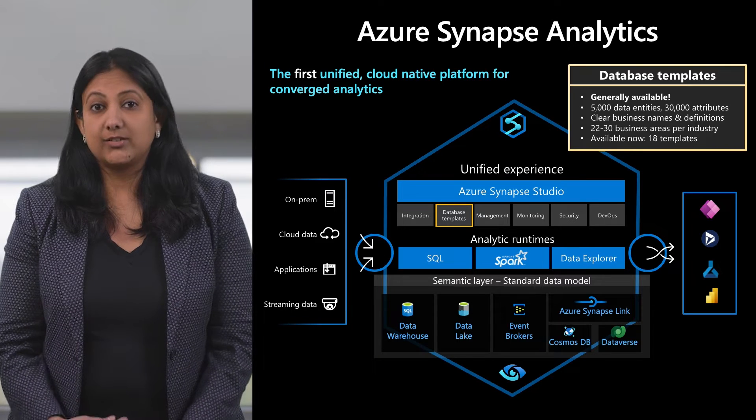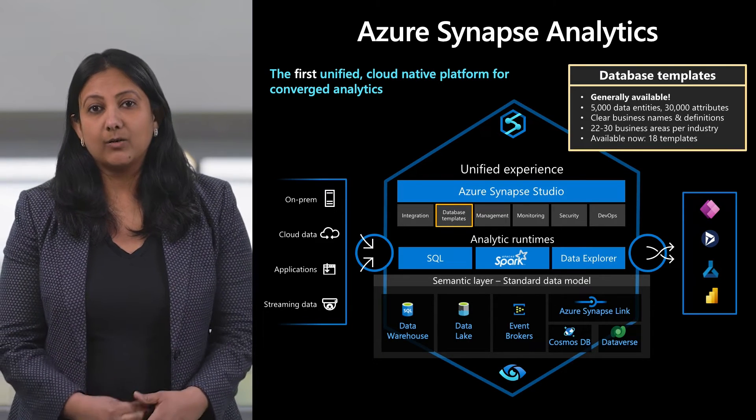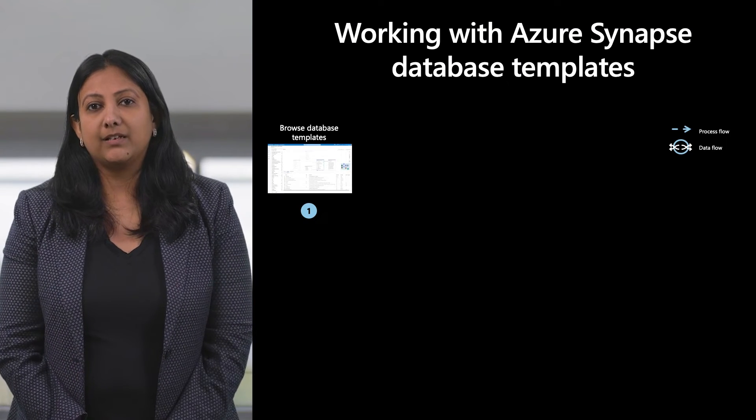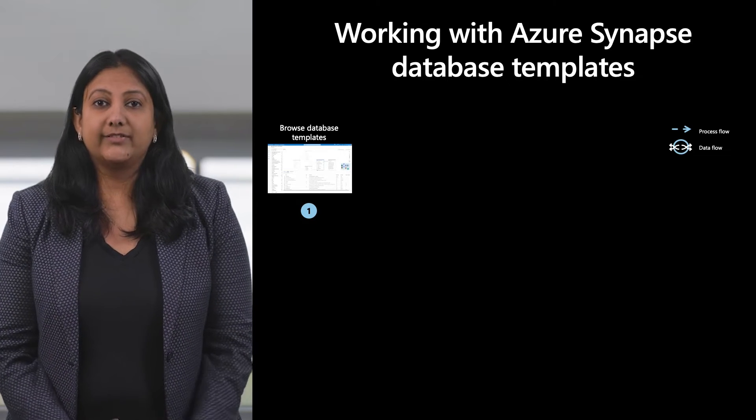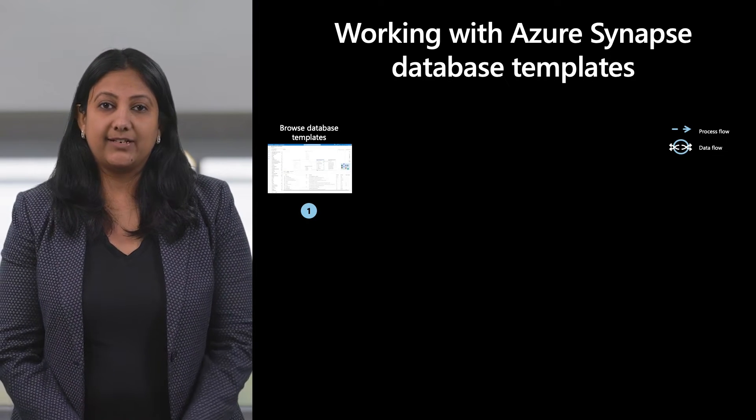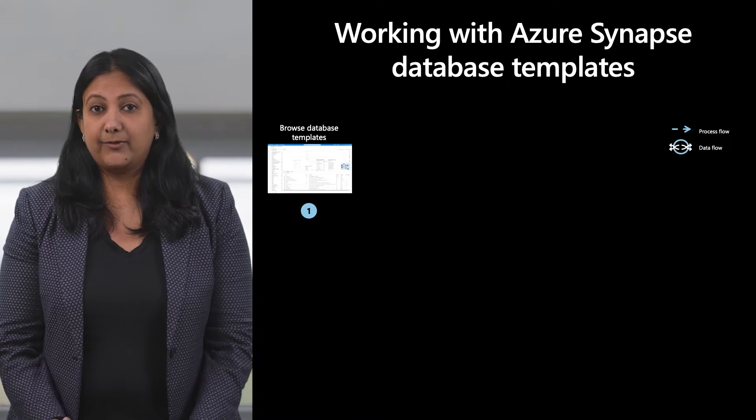These templates serve as industry blueprints that can be extended or customized to standardize your data. There are over 5,000 entities and 30,000 attributes across 18 different industry templates. The entities are grouped by business areas, and each template has over 25 different business areas covering key business functions. Now let's take a closer look at how to put these templates to use. Let me walk you through a typical user journey with database templates within Synapse. Users start by browsing through the various templates in the Synapse gallery and pick the industry that's of interest, say, for example, retail.